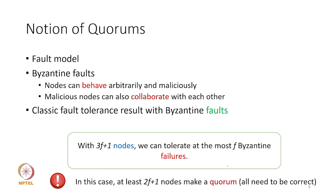Any protocol tolerant to Byzantine faults — including Ethereum and Bitcoin — must handle nodes that behave arbitrarily and maliciously, and malicious nodes can cooperate to send confusing messages. From our classical fault tolerance result, with 3f+1 nodes we can tolerate at most f Byzantine failures. Reaching consensus takes n-factorial time, and with 3f+1 nodes the maximum Byzantine failures tolerated is f — beyond that, the system is not guaranteed to complete.